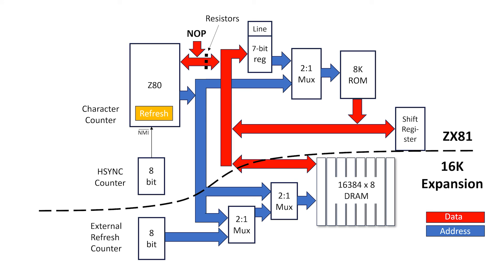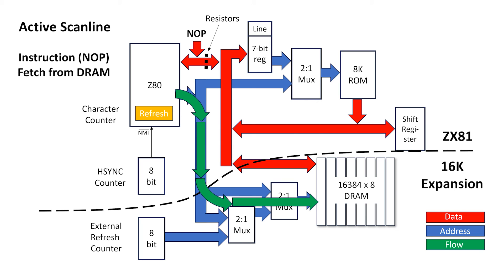Now what happens during scanout? Well, the Z80 thinks it's doing an instruction fetch, but it outputs the address of the current character to be displayed. We do a DRAM read, and the data goes into the character register. Note that this only needs to be 7 bits, not 8. Then, in the second half of the instruction fetch cycle, which is when refresh is meant to occur, the top multiplexer is configured to send the character and line number through to the ROM, which then sends its bitmap data through to the shift register for video out.